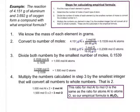Because 1.5 is not a whole number, we need one more step. We multiply the numbers from step 3 by the smallest integer that will convert all of them to whole numbers — that's 2. Multiplying 1.5 by 2 gives 3, and multiplying 1.0 by 2 gives 2. So we end up with 2 moles of aluminum and 3 moles of oxygen, and our empirical formula is Al2O3.